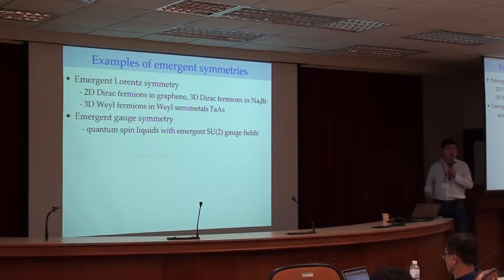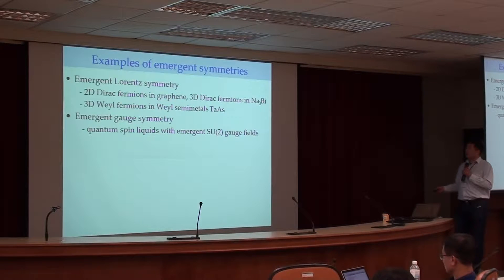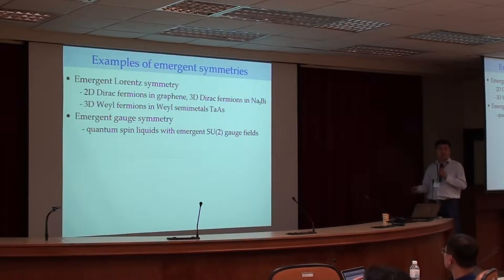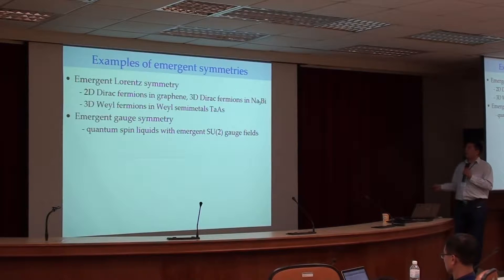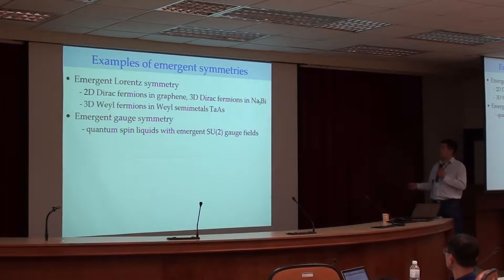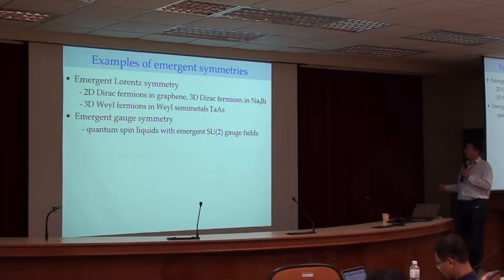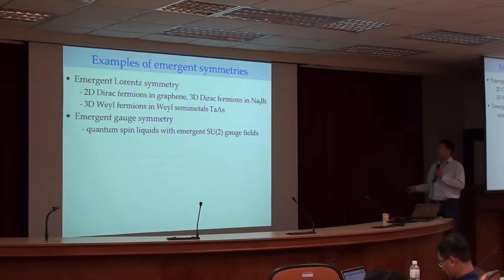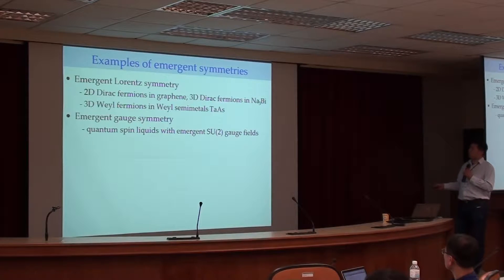There are already examples of emergent symmetries. Many of you know about emergent Lorentz symmetry in materials such as graphene. Graphene is described by 2D Dirac fermions, which have emergent Lorentz symmetry even though the graphene lattice doesn't have Lorentz symmetry. At low energy when the chemical potential is exactly at the Dirac point, the system has emergent Lorentz symmetry. Another example is 3D Dirac fermions in this family of materials, and more recently three-dimensional Weyl semimetals were discovered, also realizing emergent Lorentz symmetry in three dimensions.